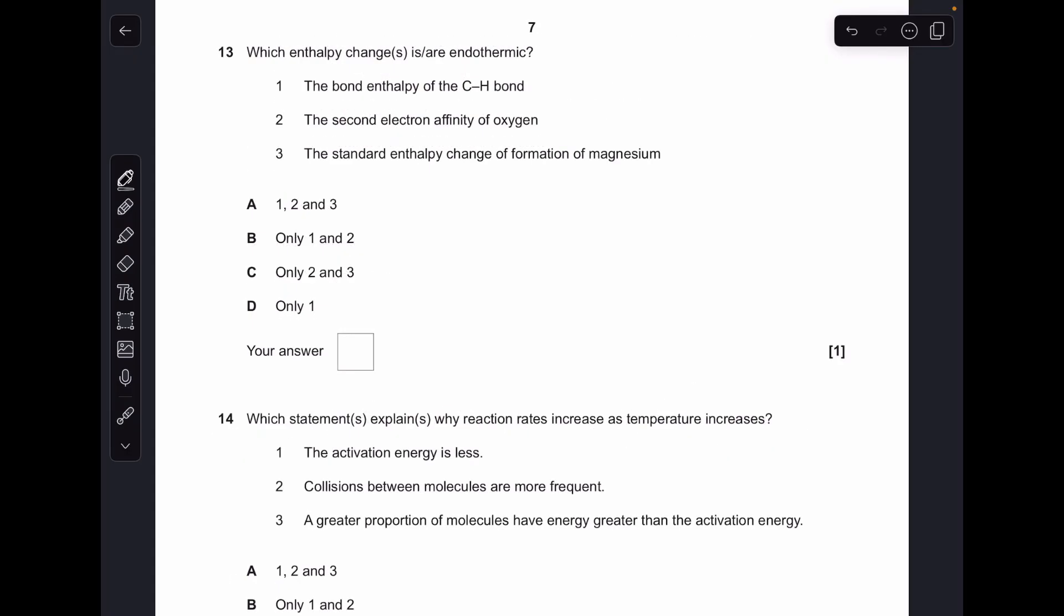Question 13, which are endothermic? So first one, bond enthalpy of CH bond. Well, all bond enthalpies are endothermic, so that's correct. There's the equation for the second electron affinity of oxygen. And this is endothermic as well, because both of the reactants are negatively charged. So they're technically going to repel each other. Number three, the standard enthalpy of change of formation of magnesium is endothermic. No, it's not, because magnesium is an element, and all elements, enthalpy of change of formation is zero. So that one was wrong. So one and two are correct, so B was the answer.